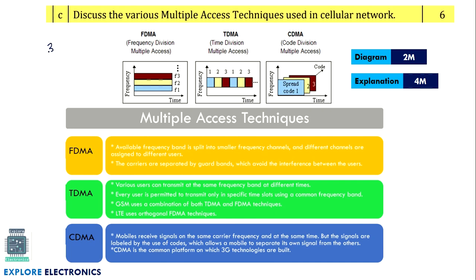Discuss various multiple access techniques used in cellular networks. There are three: FDMA (frequency division multiple access), TDMA (time division multiple access), and CDMA (code division multiple access), differentiated by frequency, time, and code respectively. If you write these three diagrams clearly, the evaluator can see that frequencies, time slots, and codes are allocated separately — the diagrams alone are worth six marks. Add a brief explanation for each to complete the answer.